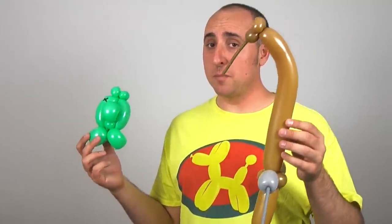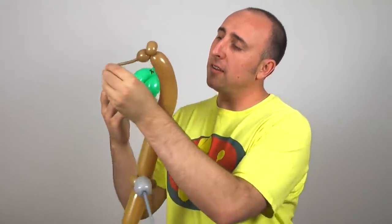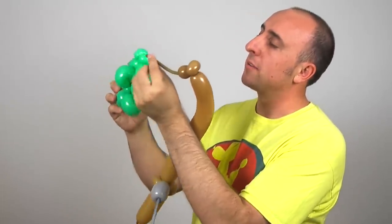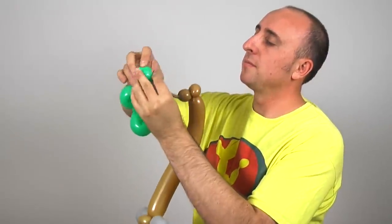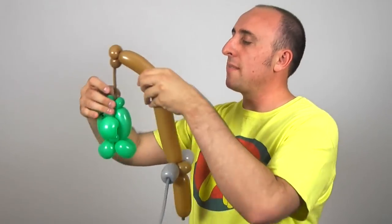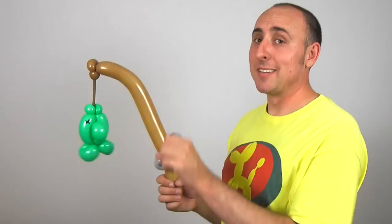Okay, we have our fish. We have our fishing pole. Now we're just going to take the end of the fishing pole and put it right there into the mouth. We're going to take a small amount and just wrap it in once. And there we have the fish on the end of our fishing pole. Time to go fishing.